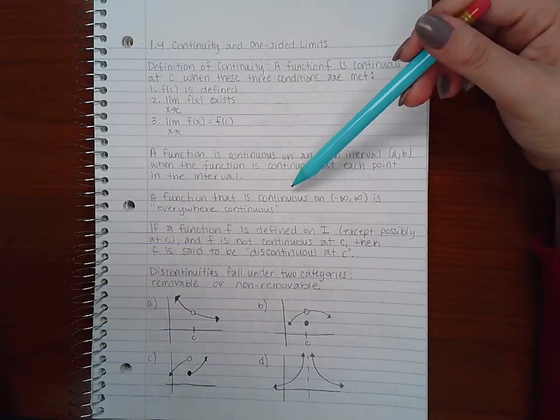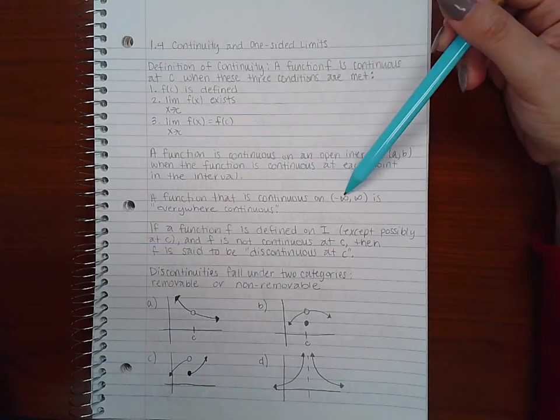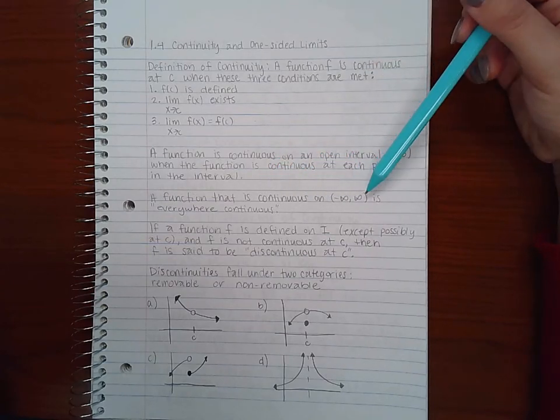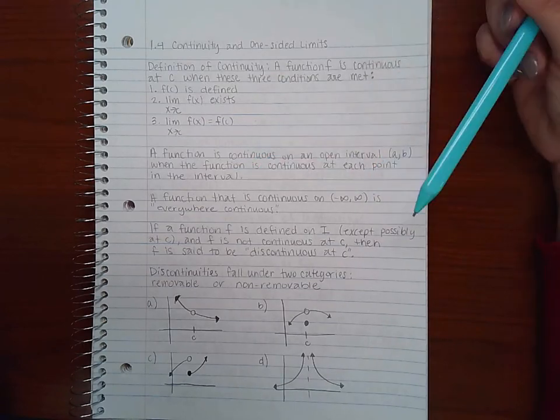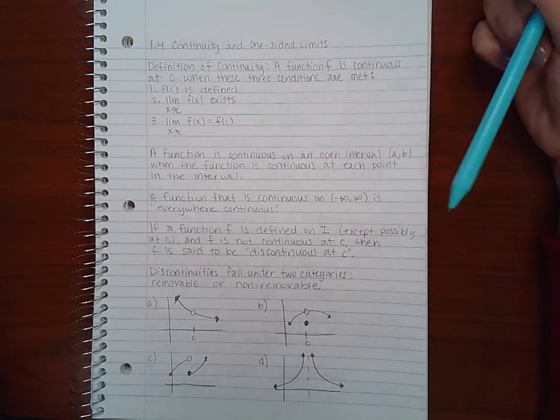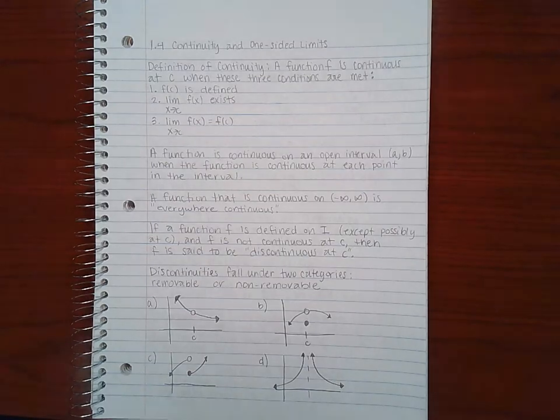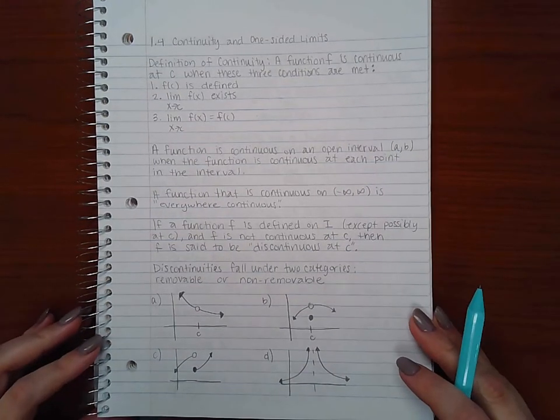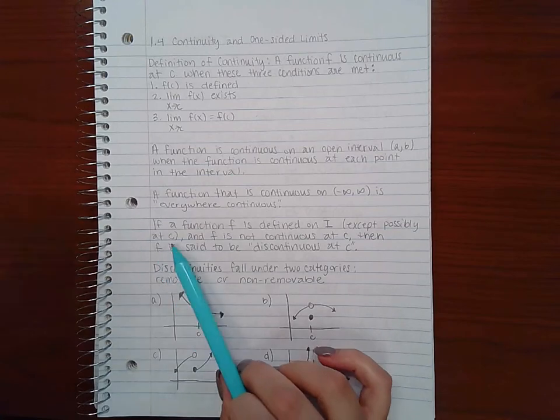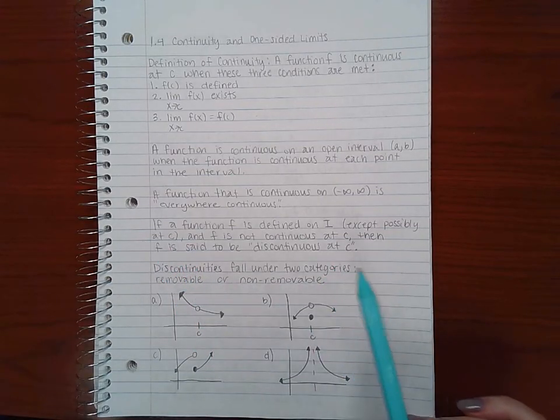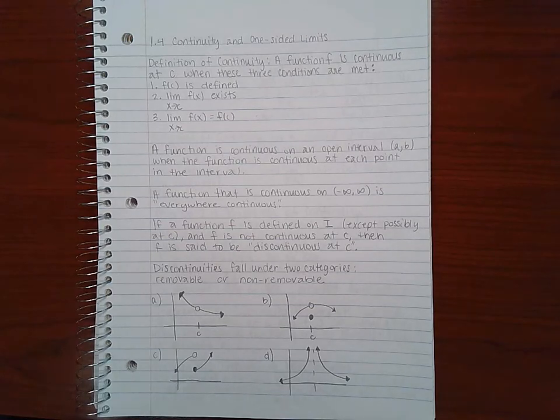A function that is continuous on negative infinity to infinity is called continuous everywhere or everywhere continuous. A function f is defined on i, an interval, except possibly at c, and f is not continuous at c, then f is said to be discontinuous at c.